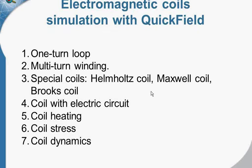Today the following cases will be reviewed. The simplest case of the coil is a one-turn loop. Then, the most common case is the multi-turn winding. There are special types of coils: the Helmholtz coil, the Maxwell coil, and the Brooks coil. We will also simulate the coil connected with an electric circuit. And there are related cases: coil heating, mechanical stress in the coil, and coil dynamics.